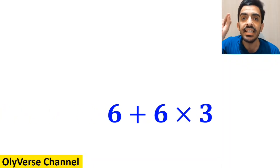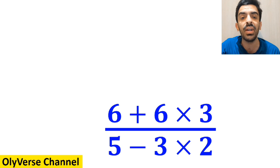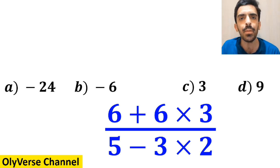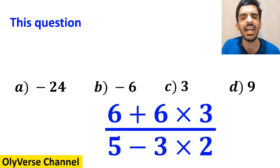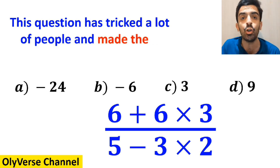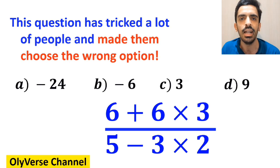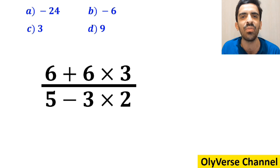What is the value of the expression 6 plus 6 multiplied by 3 over 5 minus 3 multiplied by 2? Which option do you think is the correct answer to this question? This expression has tricked a lot of people and made them choose the wrong option. Let's go through the problem and solve it together.